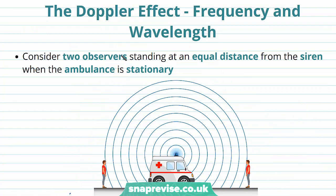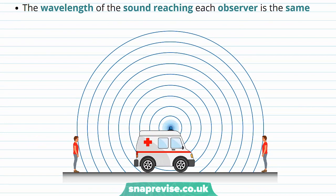We are now going to think about the Doppler effect in terms of frequency and wavelength. Consider two observers standing at an equal distance from the siren when the ambulance is stationary — both observers are a distance d from the siren. When the ambulance is stationary the wavelength of the sound reaching each observer is the same, as the wave fronts are symmetrical on both sides. Both will have the same wavelength, which we refer to by the symbol lambda. Lambda is constant.